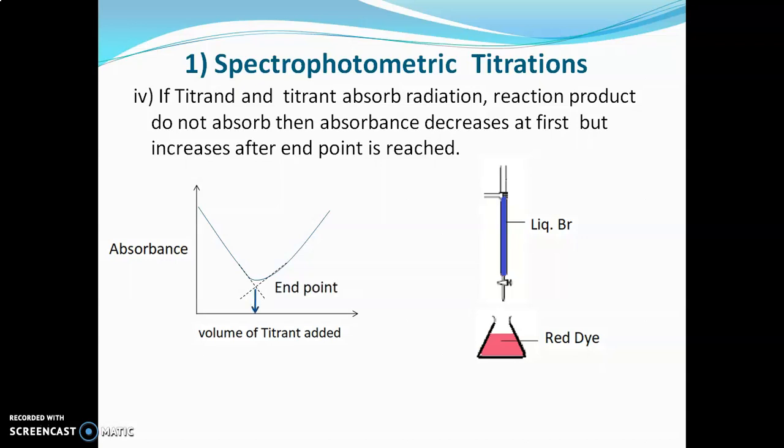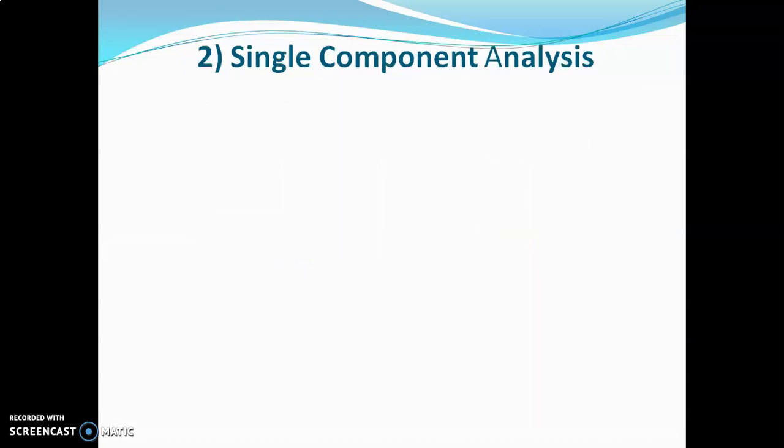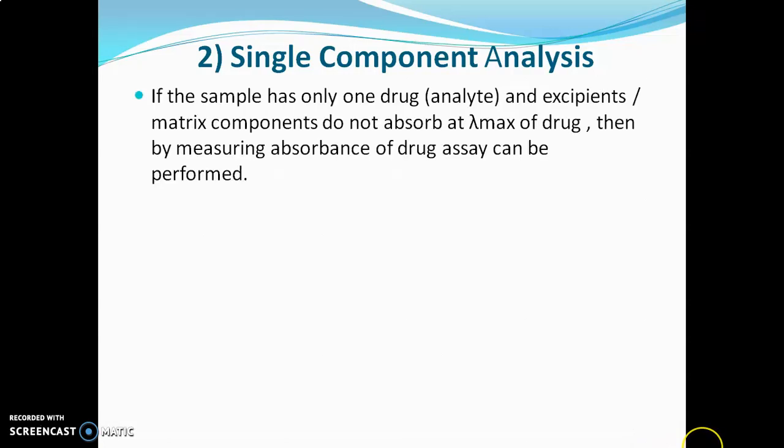These are the four types of spectrophotometric titrations. Now for single component analysis: if the sample has only one drug or analyte and the excipients and matrix components do not absorb at the lambda max of the drug, then by simply measuring the absorbance, its assay can be performed.